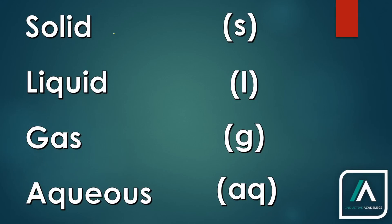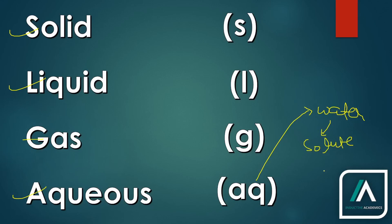In chemistry, any chemical can be in a solid state, liquid, gas, or aqueous form. Aqueous solutions are those in which we have added water as a solvent, and the solute — which could be anything: solid, liquid, or gas — is dissolved in water. That kind of solution is called aqueous solution. Solid is represented by S, liquid by L, gas by G, and aqueous solution by Aq.